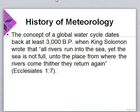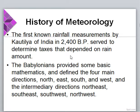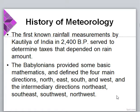The concept of a global water cycle dates back at least 3000 BC when King Solomon wrote that all rivers run into the sea, yet the sea is not full. The first known rainfall measurements by Kautilia of India in 2,400 BC served to determine taxes that depended on rain amount. Babylonians provided basic mathematics and defined the four main directions — north, east, south, and west — and the intermediary directions: northeast, southeast, southwest, and northwest.